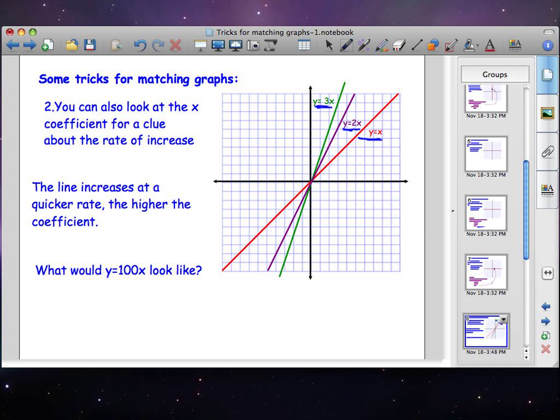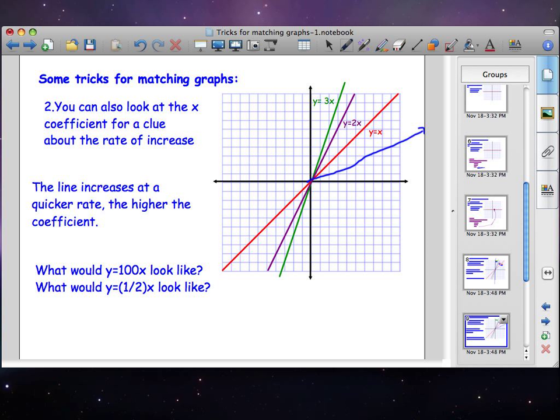So when we're looking at something like y is equal to 100x, what do you think that that would look like? It would be very, very steep, something like this. And in the same way, if we were looking at what a half an x would look like, it would be less steep than 1x, something like this.